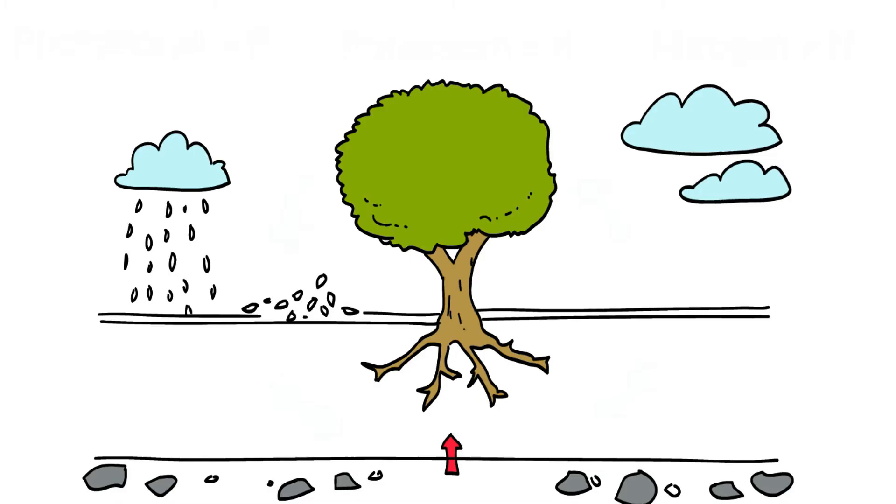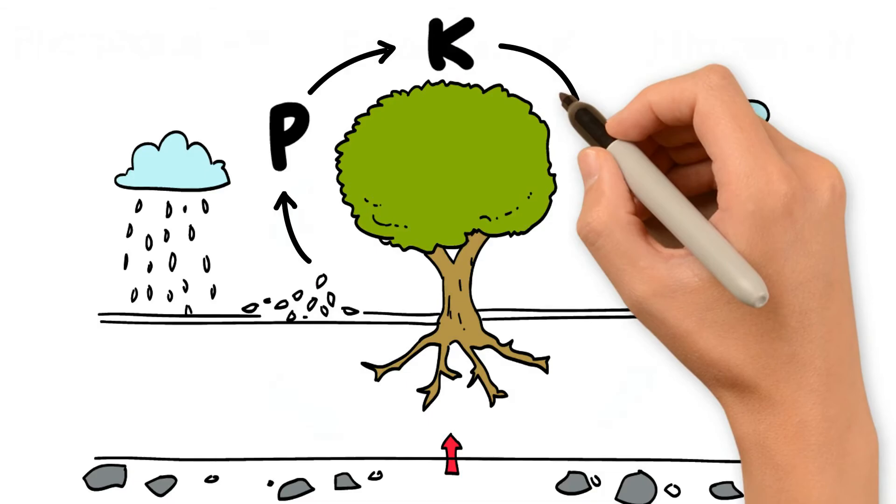In nature, these nutrients are constantly circulated between the soil, plants, and air, and in a balanced ecosystem, there is no deficiency of these nutrients.